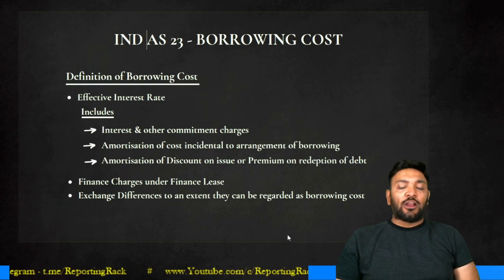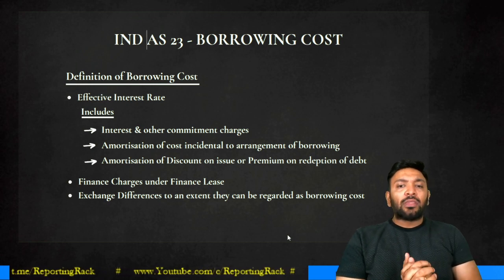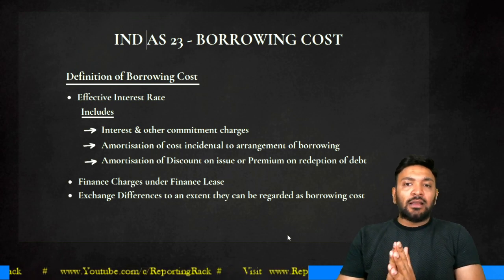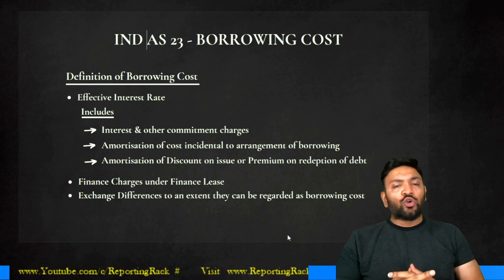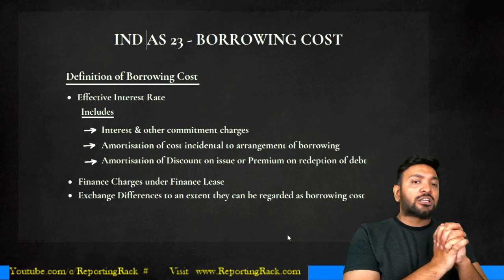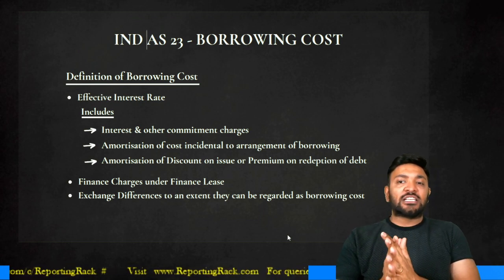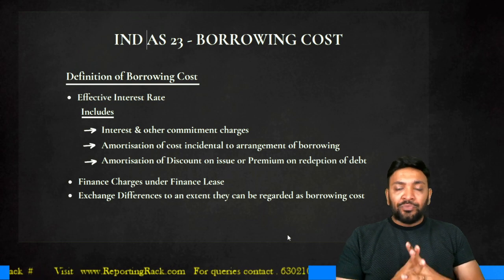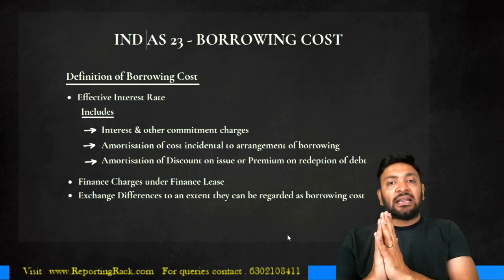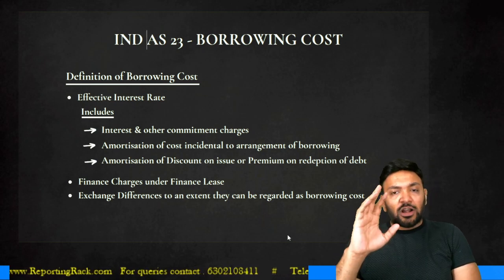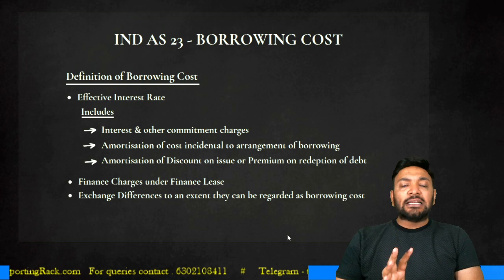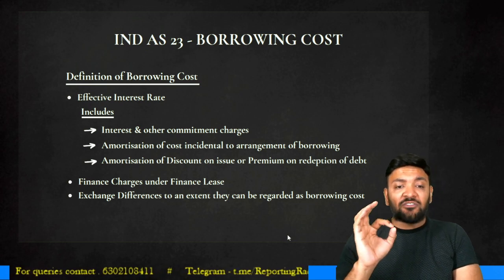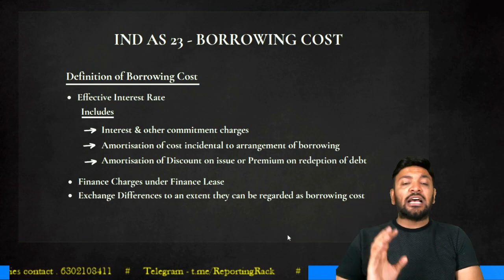Let's look at Ind AS 23, borrowing costs. This is an integral part of your asset-related standards. The objective of the borrowing cost standard is simple: in general, you would transfer the borrowing cost or finance cost to the P&L, but in certain situations this borrowing cost which you have incurred is eligible to be capitalized to the cost of the asset. That is the fundamental objective of this standard. A borrowing cost is an effective interest rate, or finance charges under finance lease, or exchange differences to the extent they can be regarded as borrowing cost.